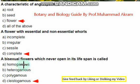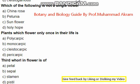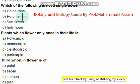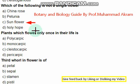Which of the following flowers is not a single flower? China rose, petunia, sunflower, hollyhock — the sunflower among these flowers is not a single flower.